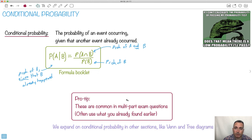So these are common in multi-part exam questions. Often use what you already found earlier. Very often, they're going to have a part where you have to do this. And the cool part is, often you have to use what you've already found. So very likely, they've already asked you to find something you needed up top or maybe on the bottom. So usually you've already done the work you needed to do. You just had to recognize it. So this is the key here. So let's do an example.